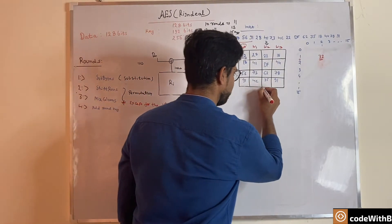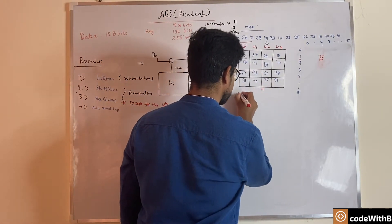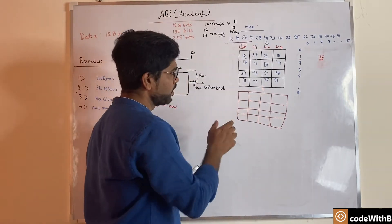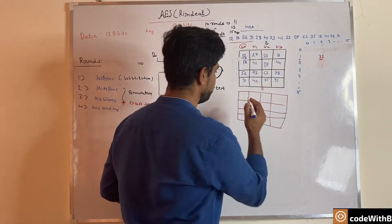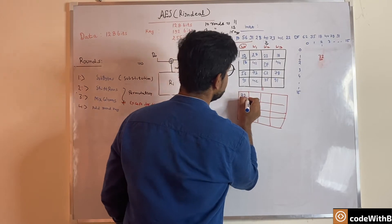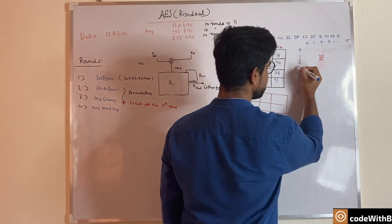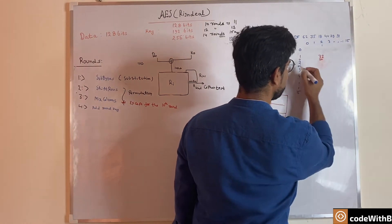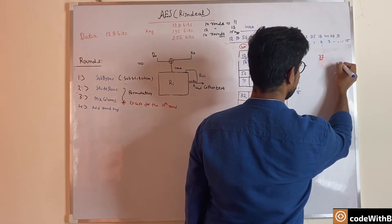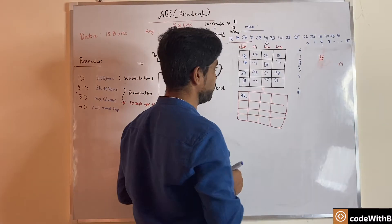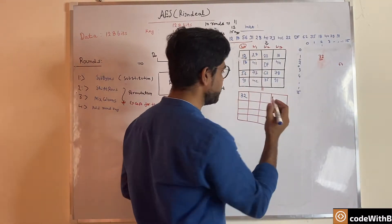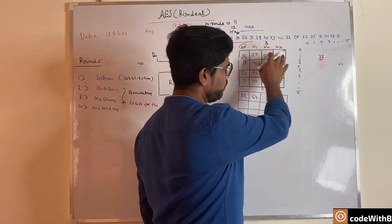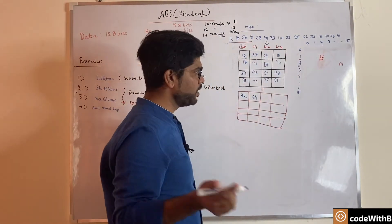Similarly, '28' means the 2nd row and 8th column — assume this value is 64 — so '28' is replaced by 64. Every individual value in the state matrix is replaced by its corresponding S-box value.